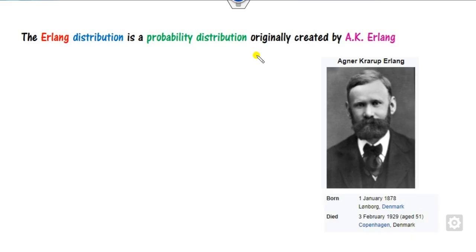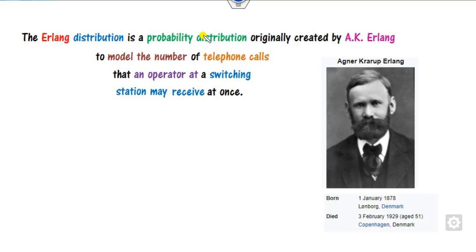What is the Erlang distribution? This was initially created by Professor A.K. Erlang, who was born in 1878 and died in 1929, and was originally from Denmark. This is a probability distribution function which is basically used to model the number of telephone calls that an operator at a switching station may receive at once.